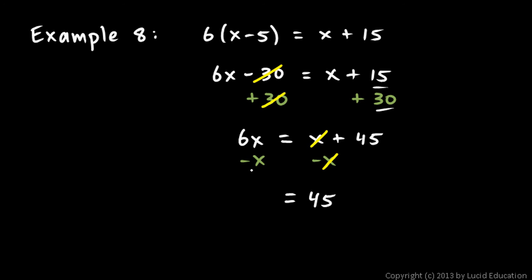On the left side, I have 6x minus x. And this is, remember, this x right here is really a 1x. So, this is 6x minus 1x, which is 5x. So, 5x equals 45.